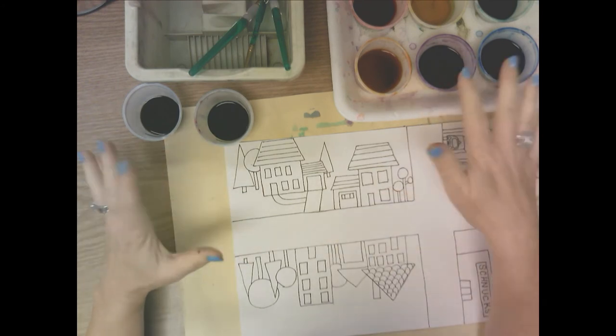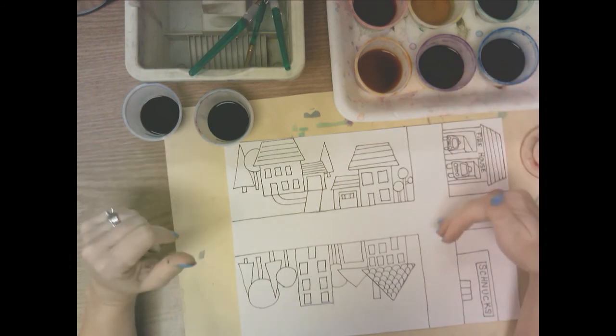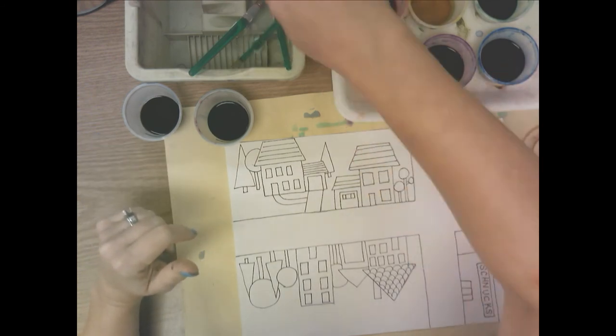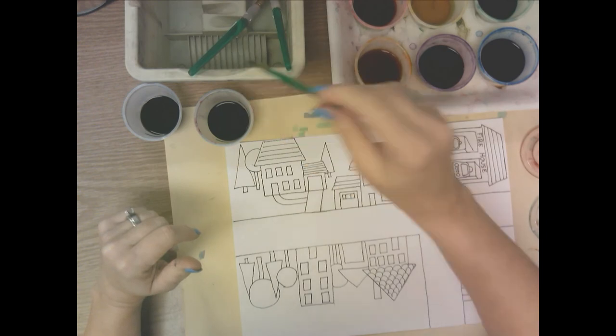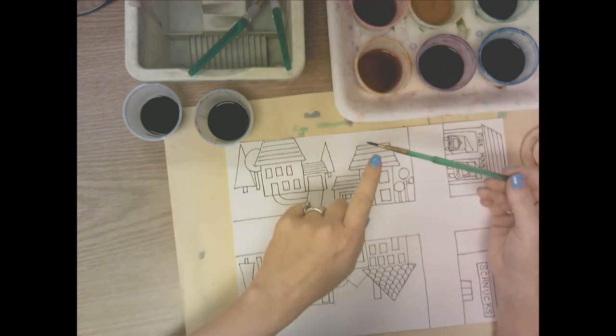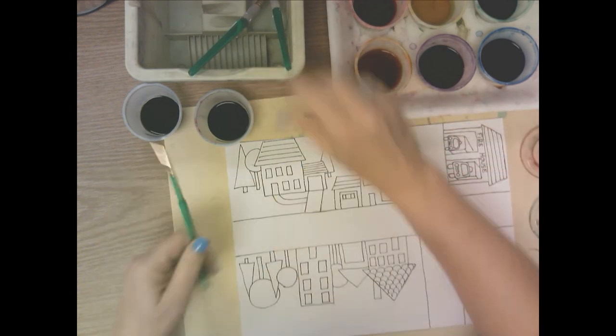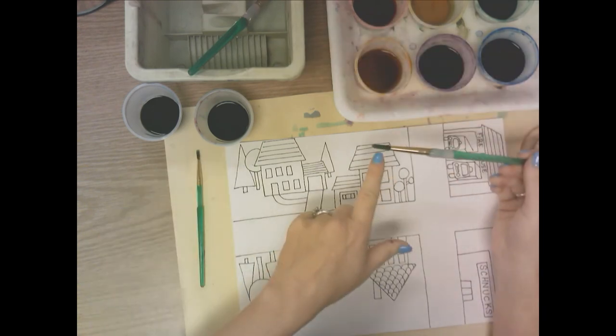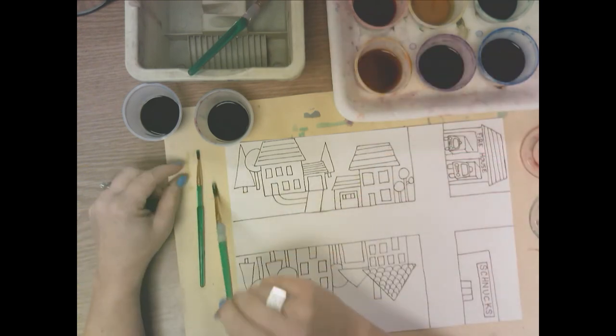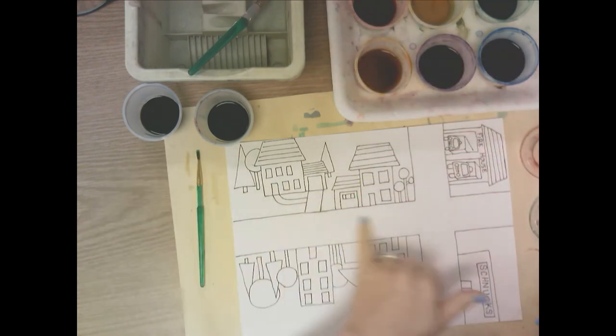So we're going to use liquid watercolor to paint in our paper. You're going to get a couple of different size paint brushes because some spaces are going to be small, so you need a small paint brush. Some spaces will be medium, so you need a medium paint brush.